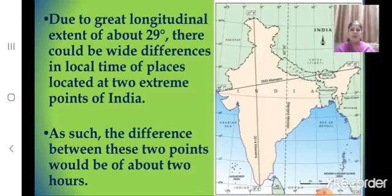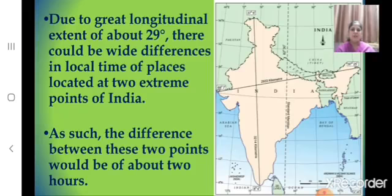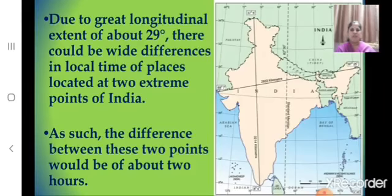Due to the great longitudinal extent of about 29 degrees, there could be wide differences in local time of places located at the two extreme points of India. The difference between these two points would be of about 2 hours — from Arunachal Pradesh in the east to Kutch in the west.